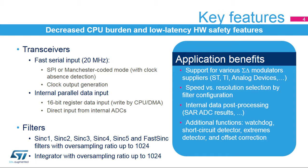Transceivers also support internal 16-bit parallel data inputs, which are written to the DFSDM input data registers by the internal ADCs or the CPU or the DMA controller. Filters are at the core of the DFSDM function. They perform 1-bit stream filtering to provide higher output resolution at lower speeds. There is an additional integrator behind the digital filter, which provides additional data averaging.